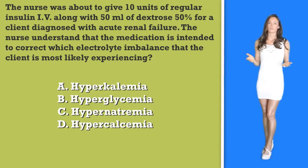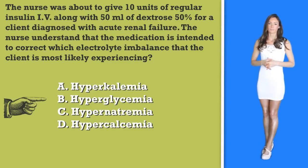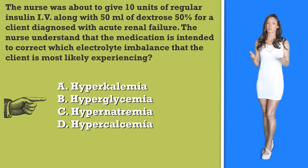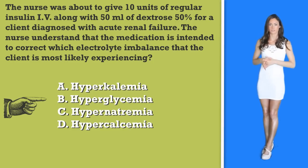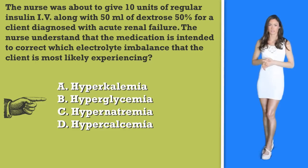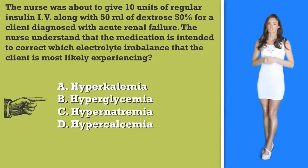If you look at the other answer options, option B, hyperglycemia, this means high blood sugar. In cases of high blood sugar, you do not want to give more sugar. In essence, you do not want to give dextrose 50%, as this would cause the blood sugar to get even higher. So this answer option would not be correct.